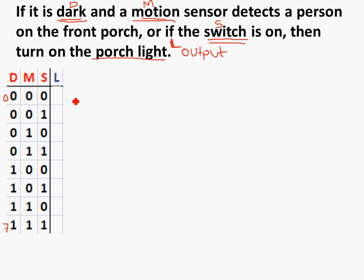Let's take a look at the first row. D equals 0, so that means it's not dark. M equals 0, meaning there's no movement. And S is 0, meaning there's no switch that is turned on. So if it's not dark and there's no movement, our light should be off — L equals 0. In the second row, D is 0, M is 0, S is 1, so the switch is on. That means our light should also be on. Next, D is 0, M is 1 meaning there's movement, but it's not dark and the switch is off, so the light should not be on.